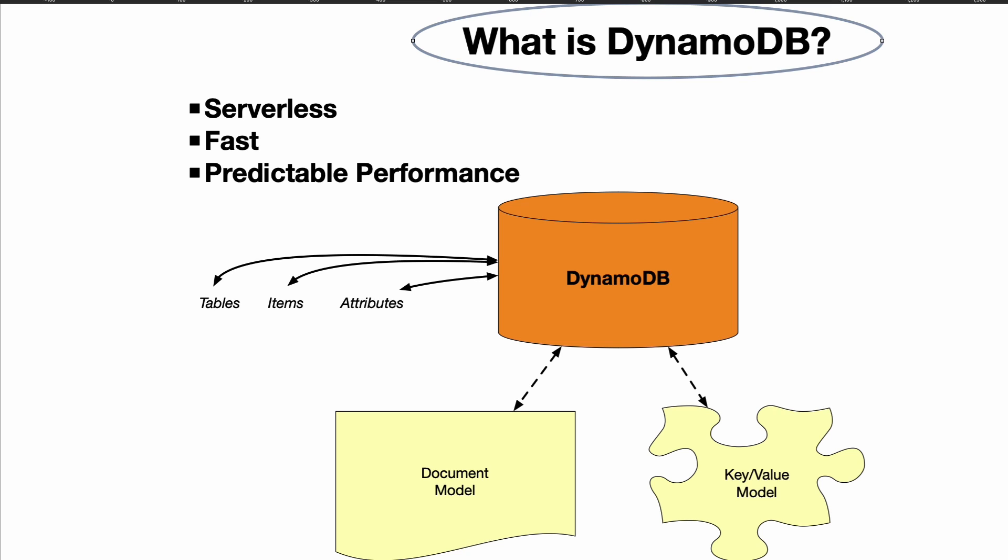Dynamo charges you based on what you use. Key enterprise capabilities include built-in security, in-memory caching, data replication across availability zones, and integration with AWS services.